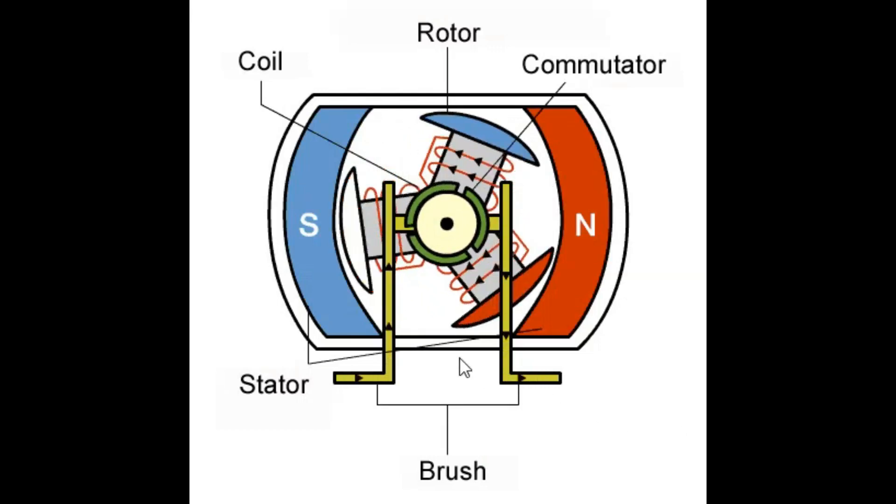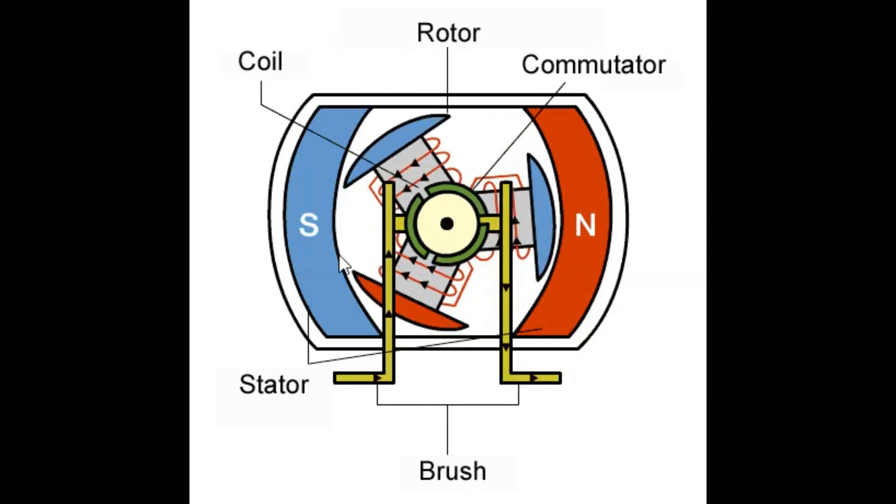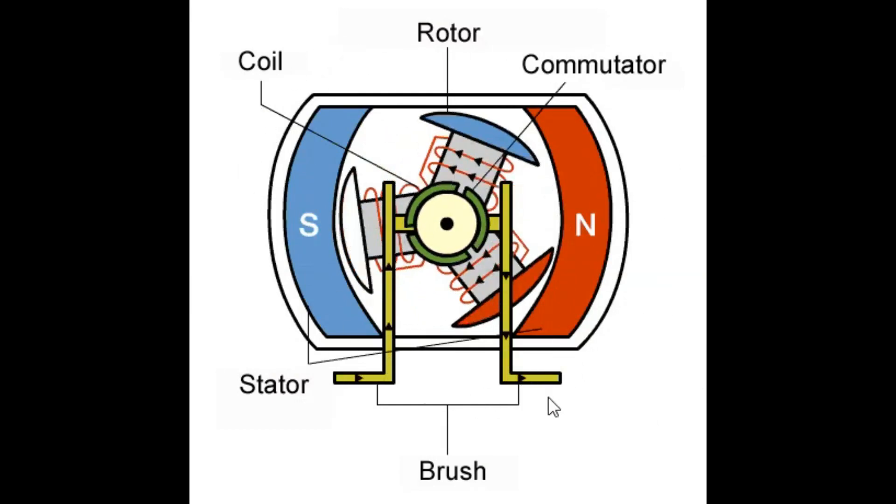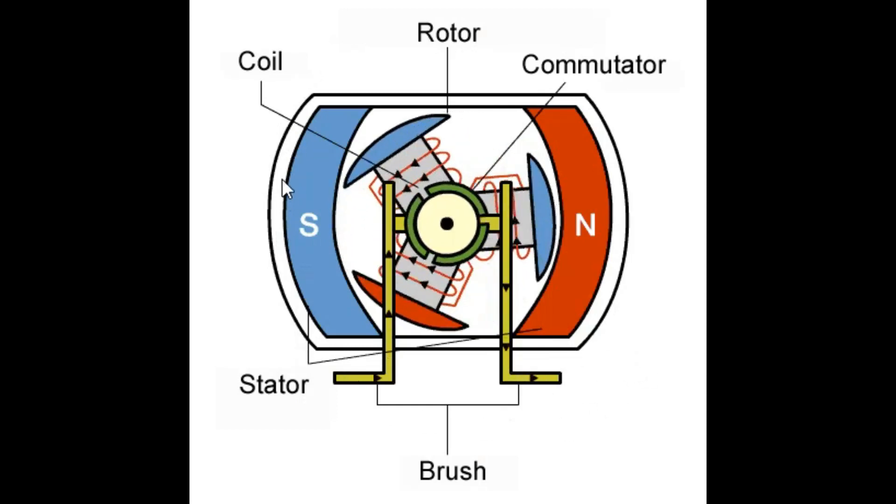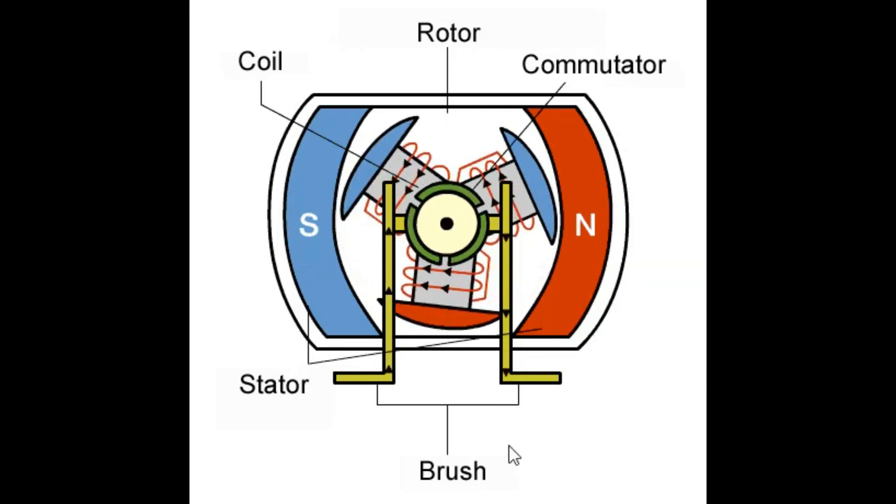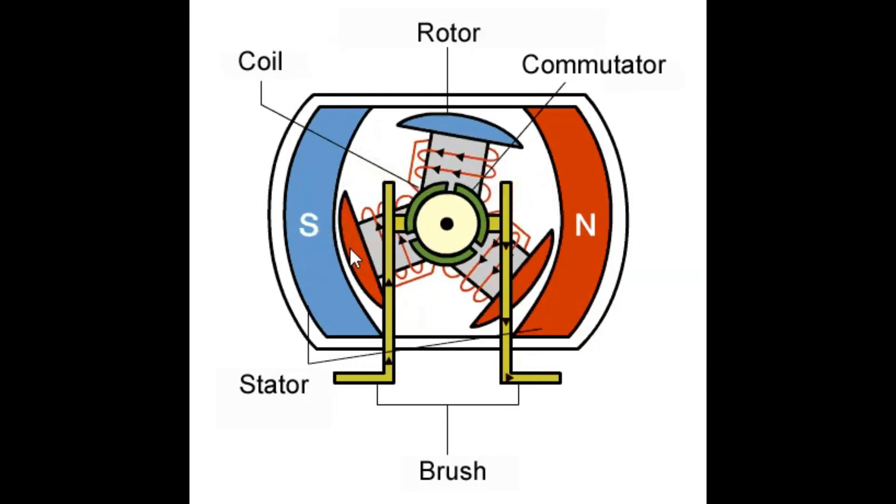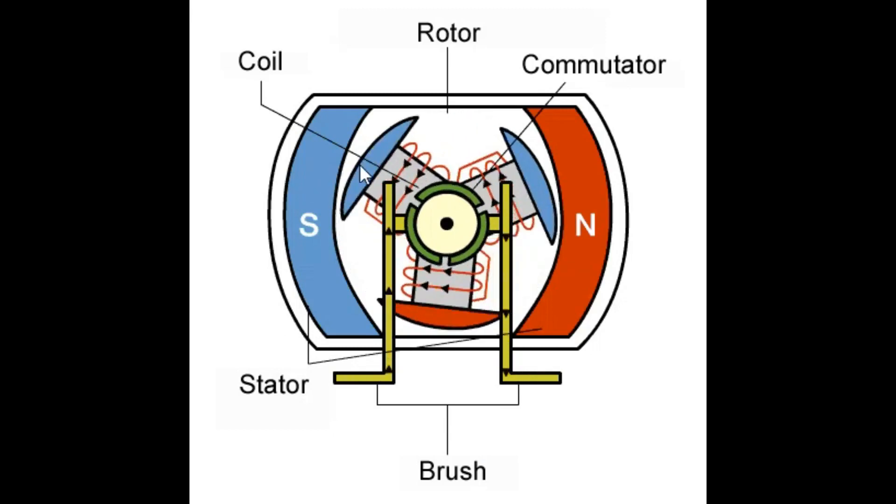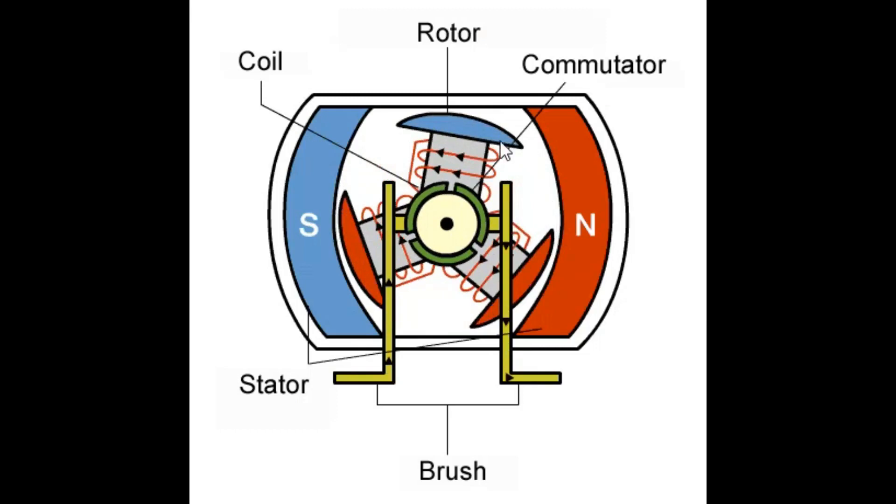Let's consider for a moment this animation of a brushed DC motor. Now this has some things in common with the pulse DC motor and a lot of things that are different. And I'll leave it as an exercise to the viewer to note the similarities and differences. The thing I want to point out here is, let's say that's north and now it's south.